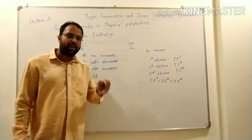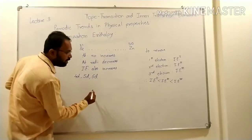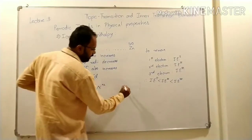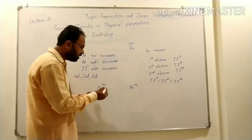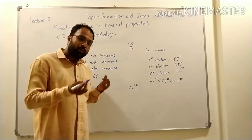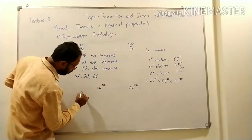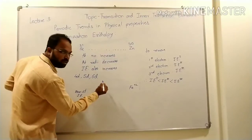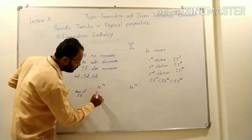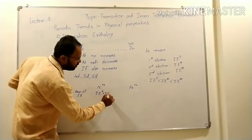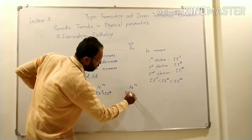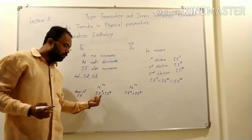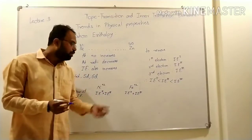Ionization enthalpy also helps to predict thermodynamic stability — specifically, which ion at a particular oxidation state is more stable. For example, comparing Na²⁺ and Fe²⁺: which ion is more stable is decided by the sum of ionization enthalpies. For a +2 ion, that means removing 2 electrons, so we calculate IE₁ + IE₂. The ion whose sum of ionization enthalpies has a smaller value has greater stability.